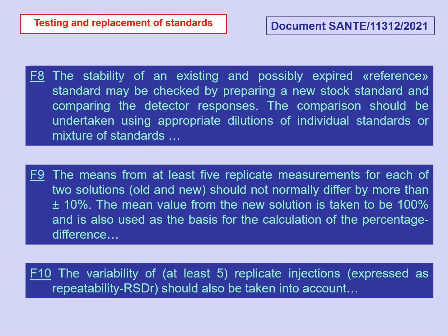In particular, the minimum quality criteria required for the preparation of standards are specified in points F8, F9, and F10 of the document, which literally state: the stability of an existing and possibly expired reference standard may be checked by preparing a new stock standard and comparing the detector responses. The comparison should be undertaken using appropriate dilutions of individual standards or mixtures of standards.